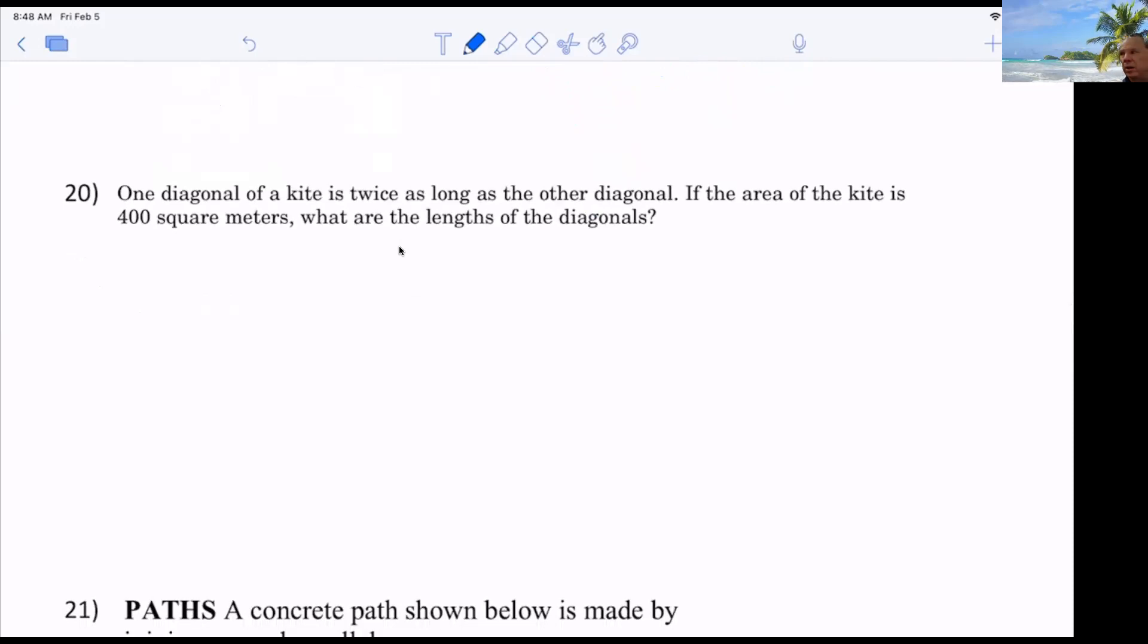What is that, Charlie? 20. One diagonal of a kite is twice as long as the other if the area of the kite is 400. Okay. So what's the formula for area of a kite? Half the diagonals. And again, if you forget, that's what you got an iPad for. Area of a kite. And I'll tell you. So again, area was what? 400 equals one half. X times what? 2x, correct?